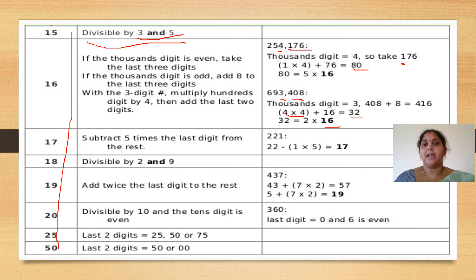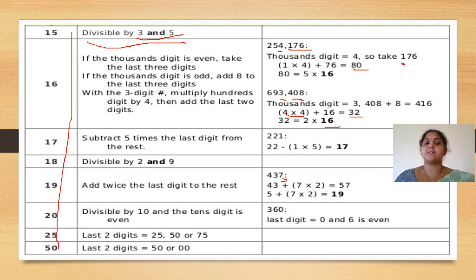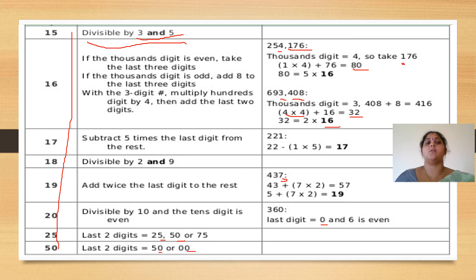For 17, subtract. For 18, check divisibility by 2 and 9. For 19, add twice the last digit to the rest — 7 is the last digit; multiply by 2 and add, then check if divisible by 19. For 20, the last digit should be 0 and the tens digit should be even. For 25, the last two digits should be 25, 50, 75, or 00. For 50, the last digit should be 0.